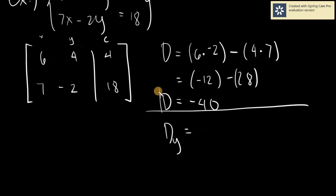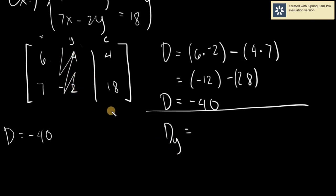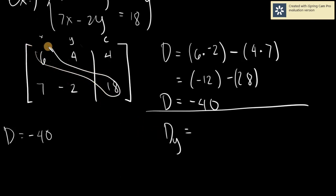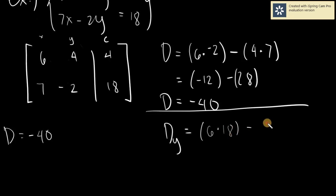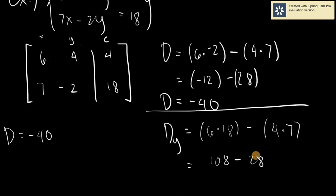Let's list down D as negative 40. D sub y can be solved by covering y and cross multiplying what remains. You will have 6 times 18 minus 4 times 7. 6 times 18 is 108, minus 4 times 7 which is 28, giving us 80. So your D sub y is equal to 80.